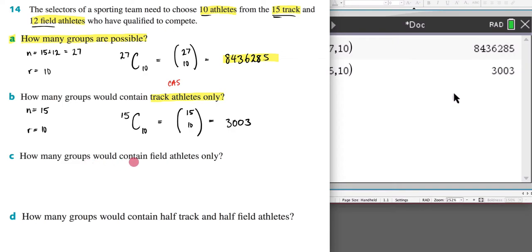Next, how many groups would contain field athletes only? So now I'm just considering the 12 field athletes. So n equals 12, r equals 10. 12C10, that's the same as 12 on 10, just a difference in notation.